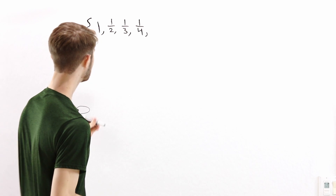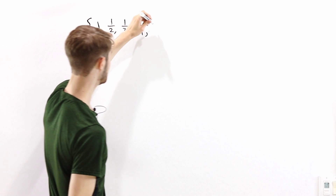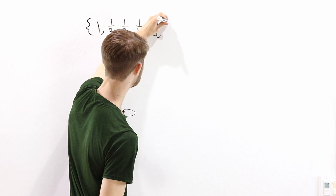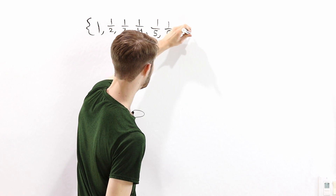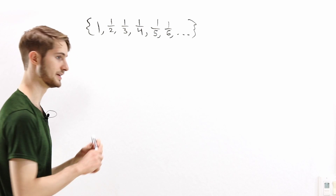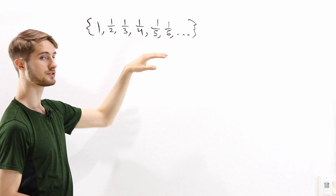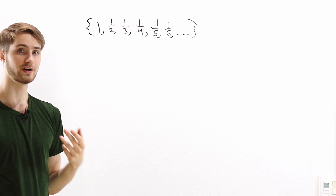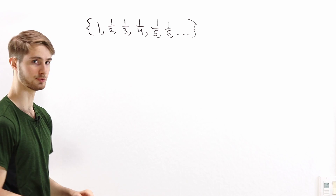But what if we consider the set 1, 1/2, 1/3, 1/4, 1/5, 1/6, and so on, all the way to infinity? In other words, this is the set of numbers 1/n for every n greater than or equal to 1.